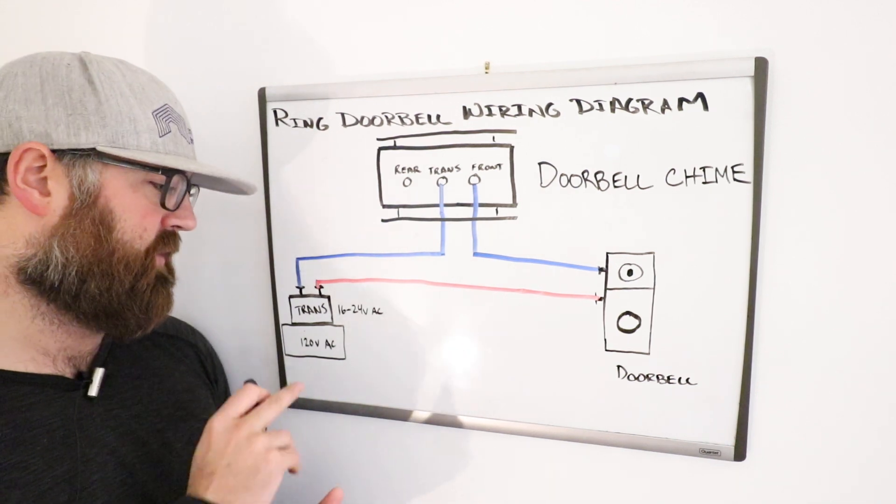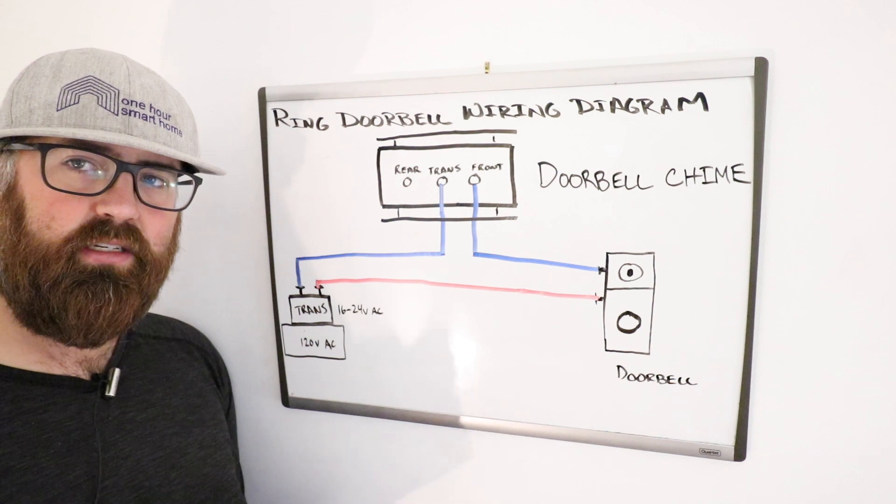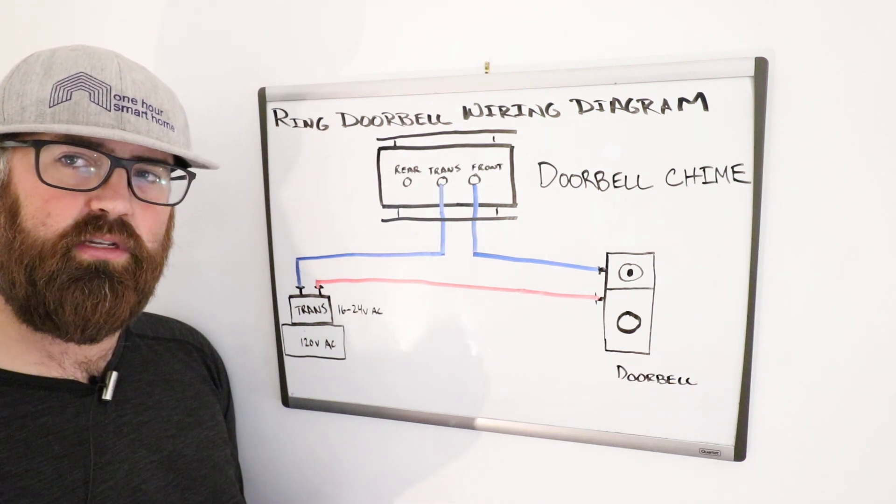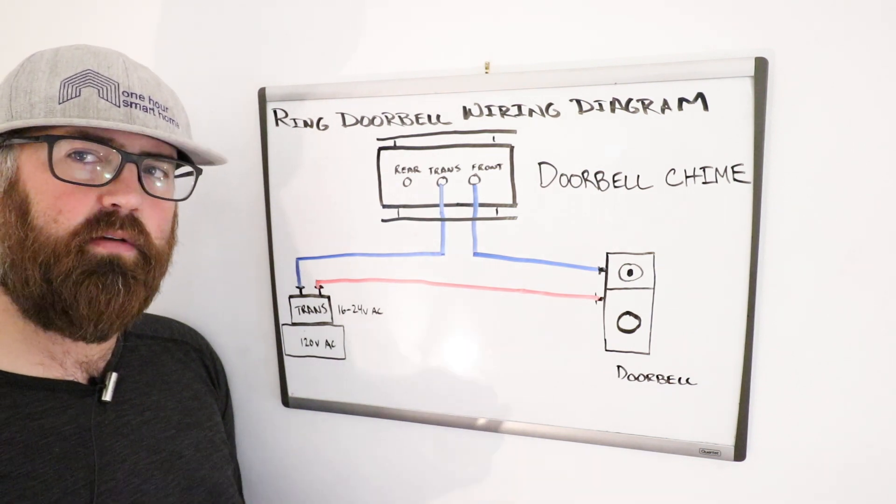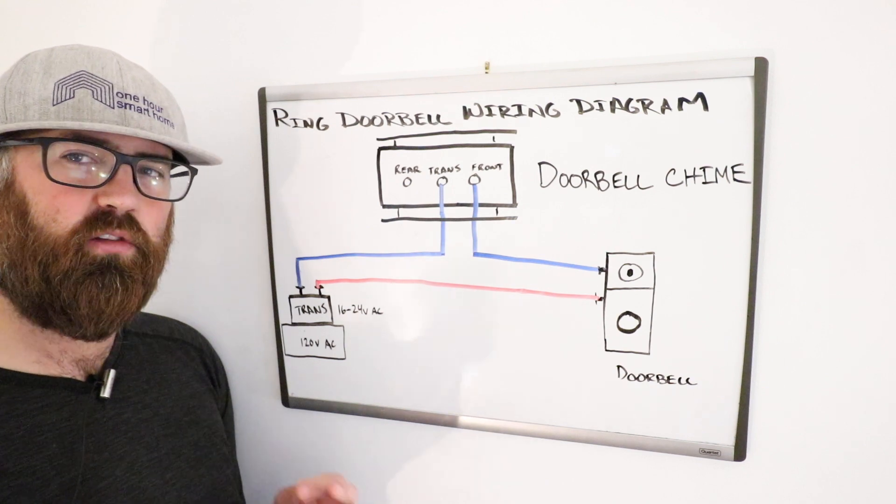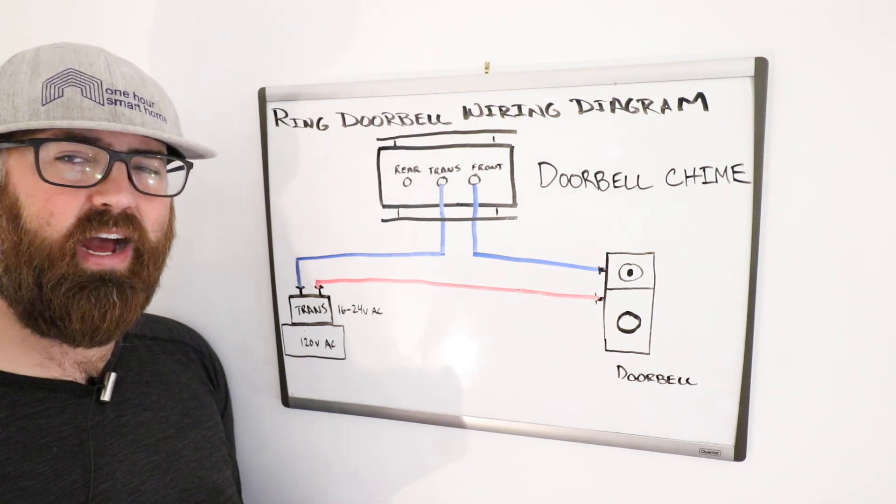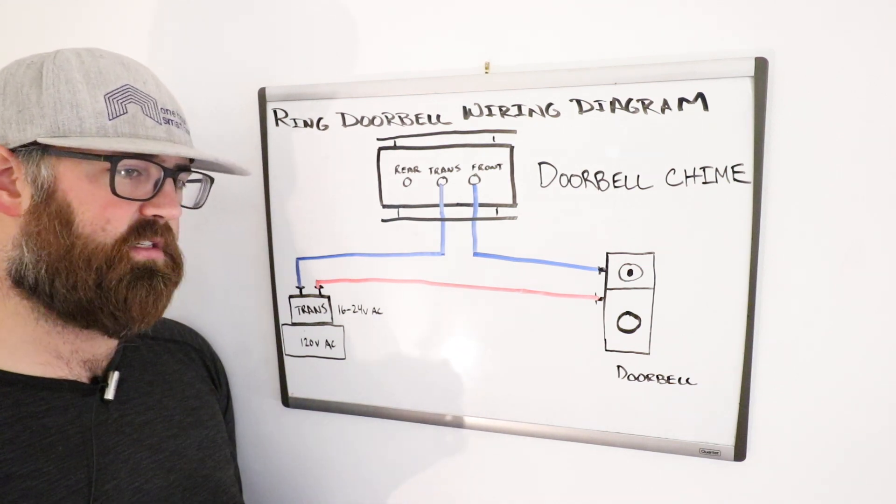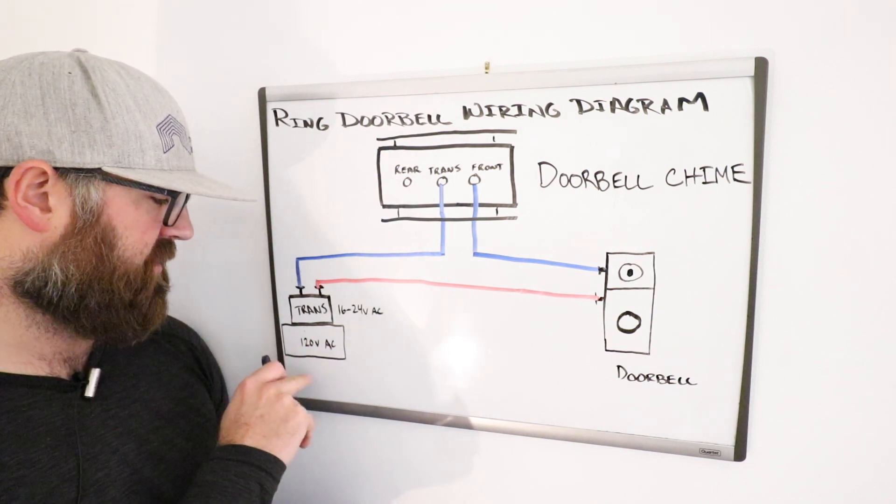Now the first part of the system is the doorbell transformer. What a doorbell transformer does is it steps down electrical current from 120 volts, which is typically in your house, down to a lower voltage from 16 to 24 volts, which is safer for wiring for low voltage appliances and stuff like that, less likely to cause fire hazards, as well as it's easier to run. It's not as big of wire and it doesn't necessarily have to be in conduit to get from point A to point B.